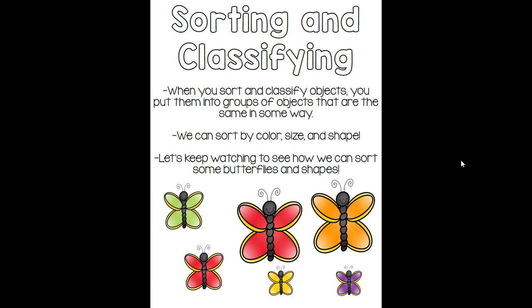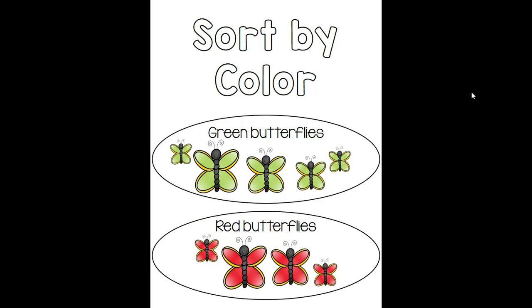Let's keep watching to see how we can sort some butterflies and some shapes together. Let's take a look at this first page. On this page, I have sorted the butterflies by color. So you can see that I've got a group of green butterflies and I've got a group of red butterflies.